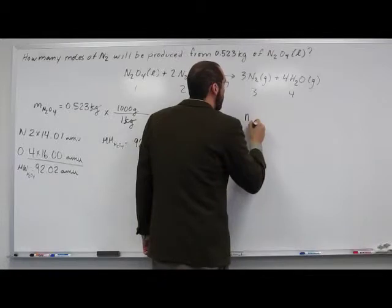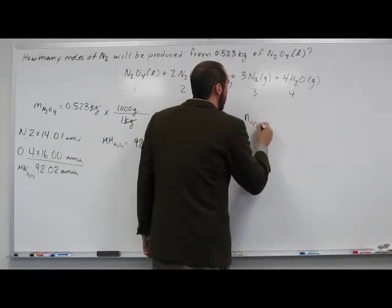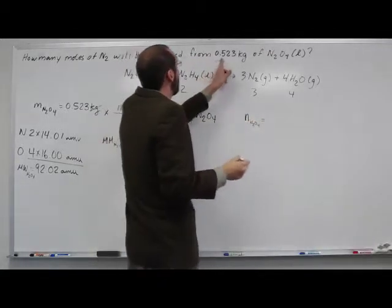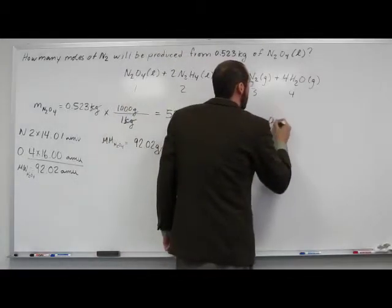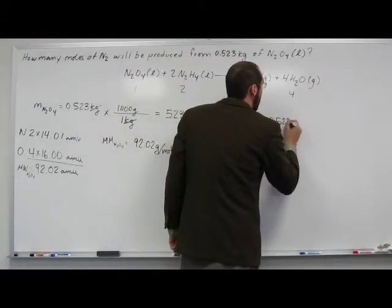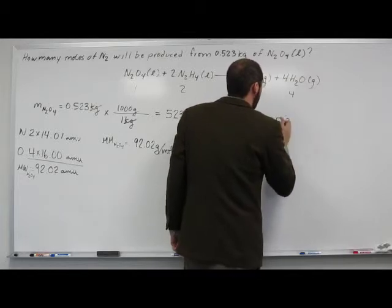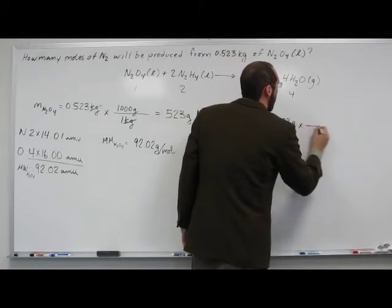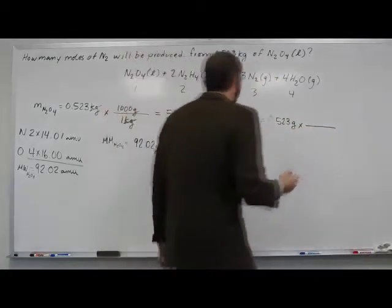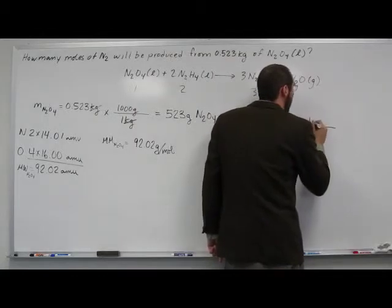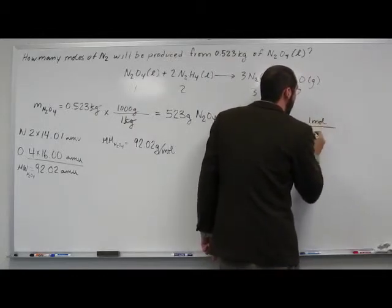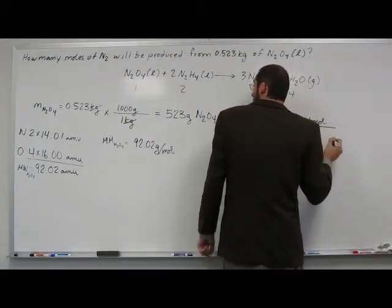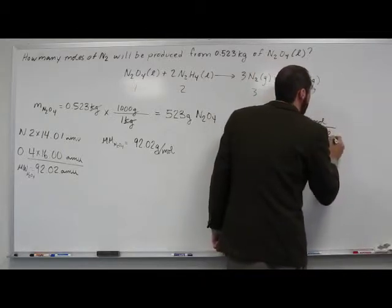So the number of moles of N2O4 equals, we converted that, 523 grams multiplied by 1 mole over 92.02 grams.